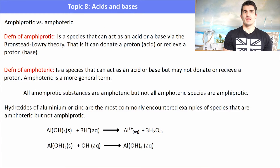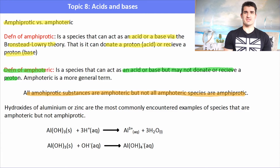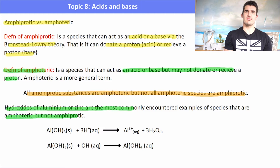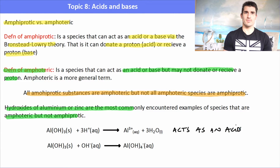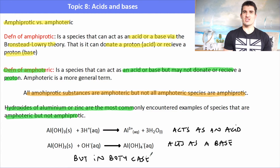Amphiprotic versus amphoteric: amphiprotic means it can act as an acid or base by donating or receiving a proton. Amphoteric is a more general term — it describes something that may act as an acid or base but does not necessarily receive or donate a proton. All amphiprotic substances are amphoteric, but not all amphoteric substances are amphiprotic. Common examples are hydroxides of aluminium or zinc, which can act as acid or base without actually transferring protons.